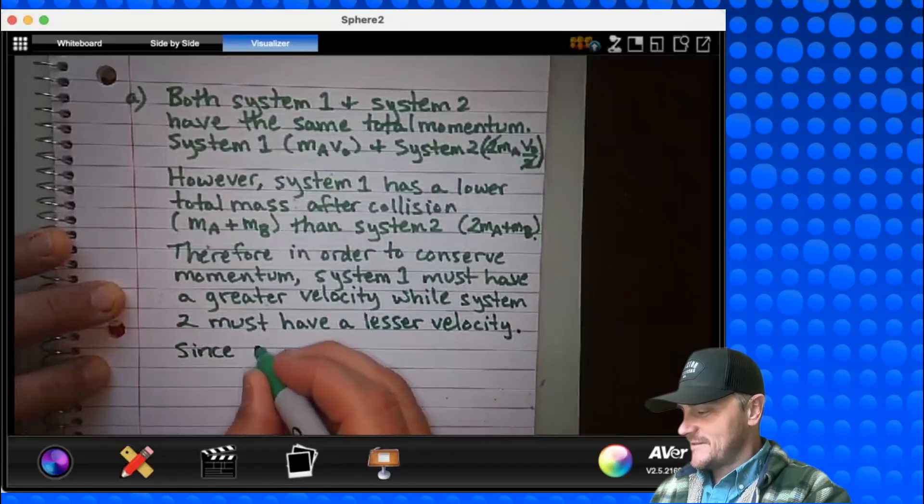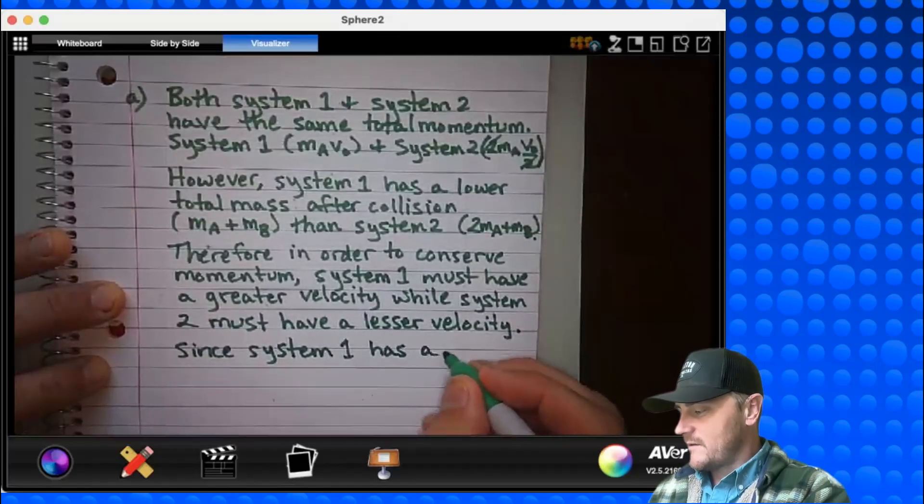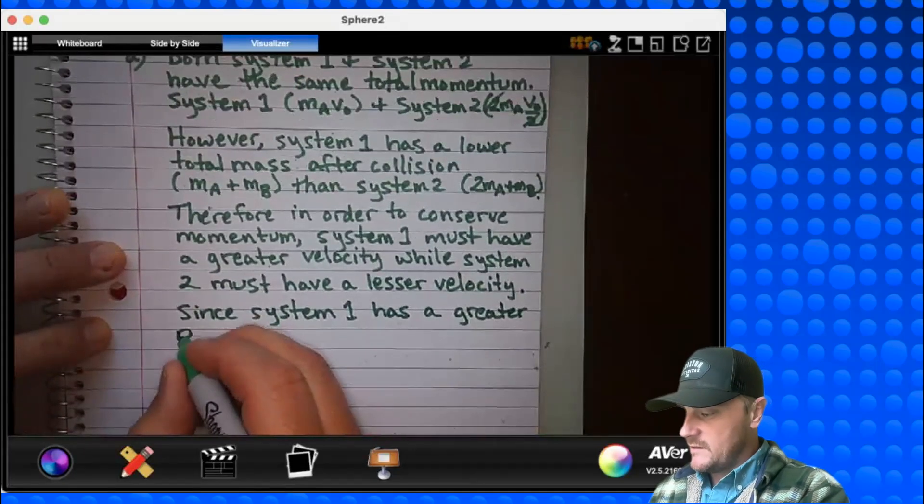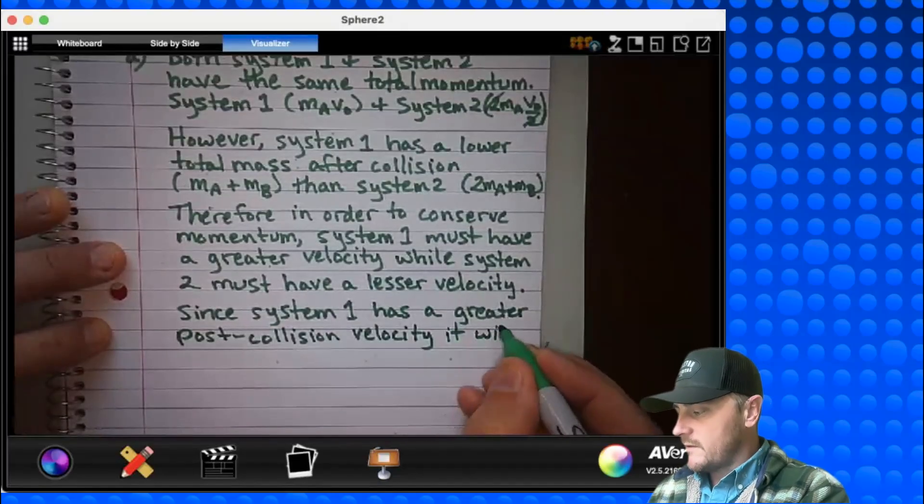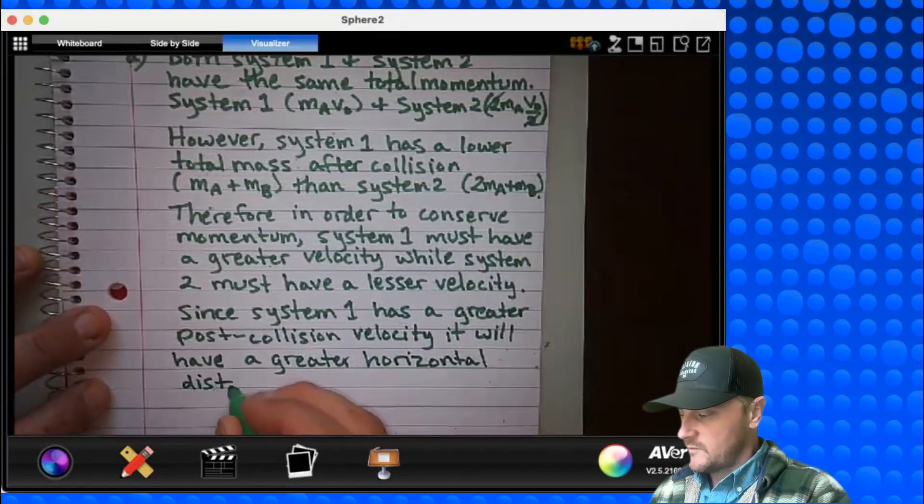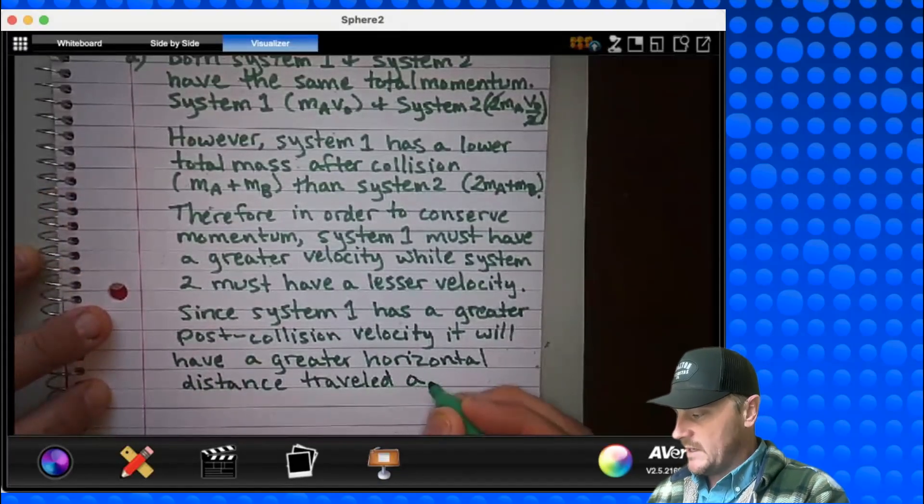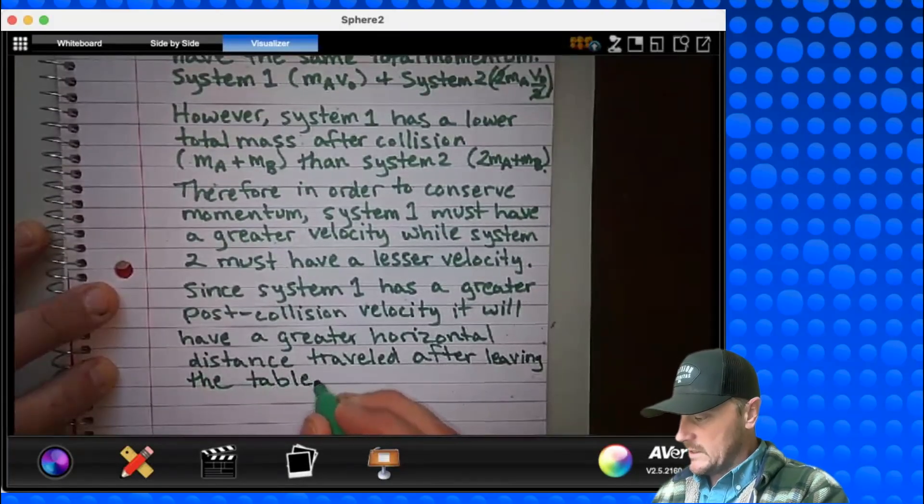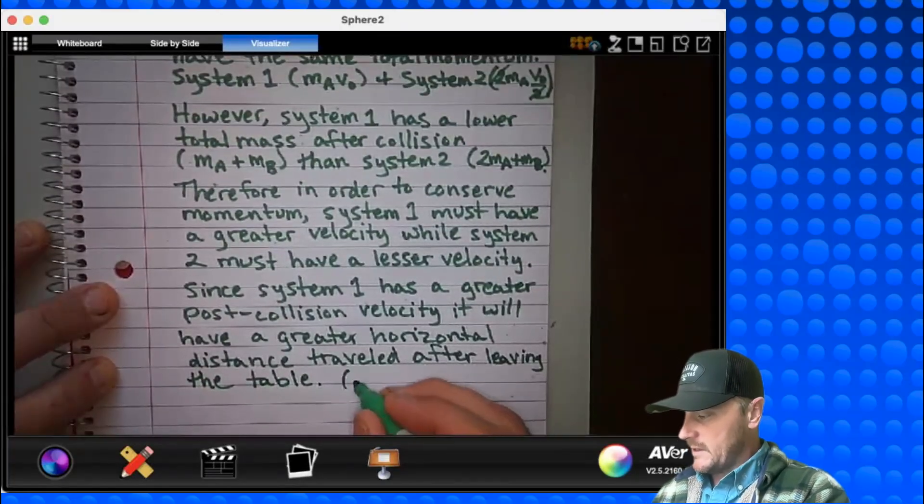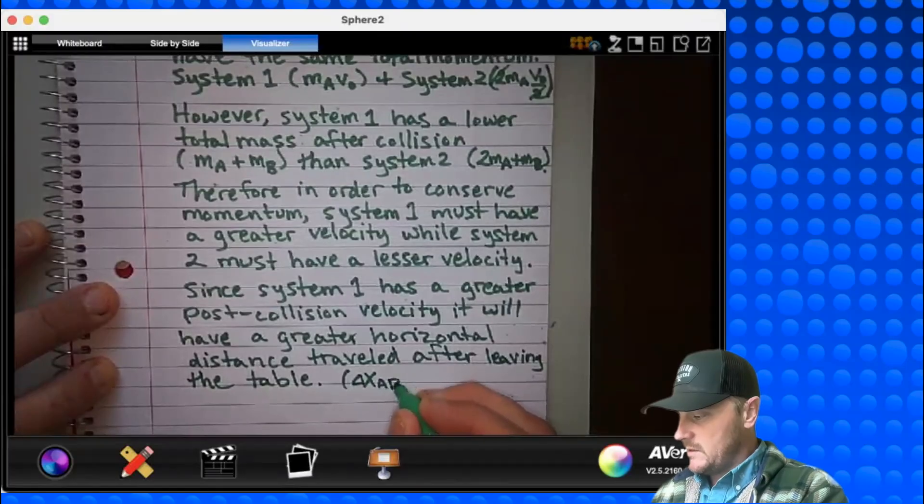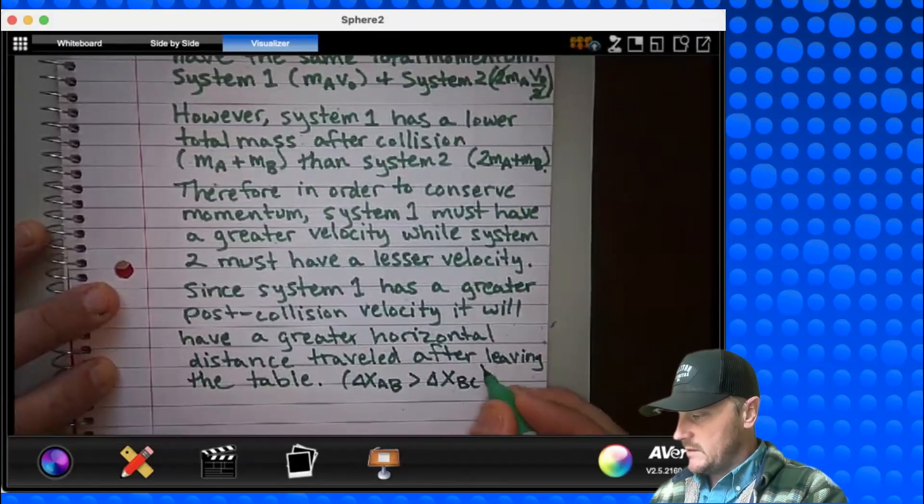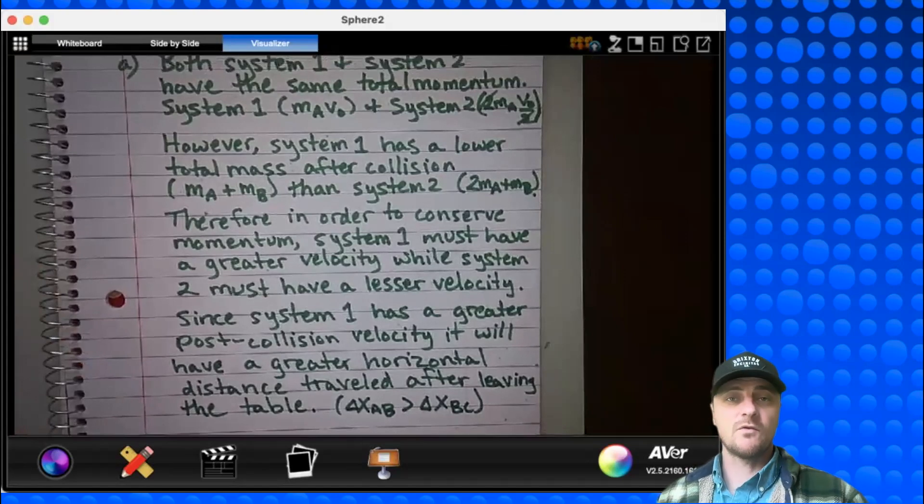Since system 1 has a greater post-collision velocity, it will have a greater horizontal distance traveled after leaving the table. So that is a lot to write. And I'll say right here, to really sell it, delta XAB is greater than delta XBC. If they have arguments with that, they're crazy.